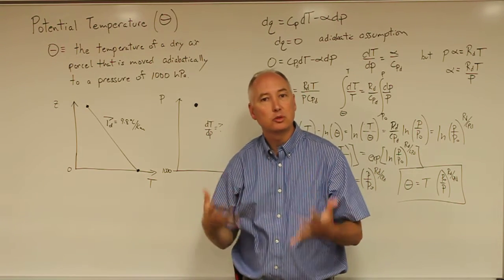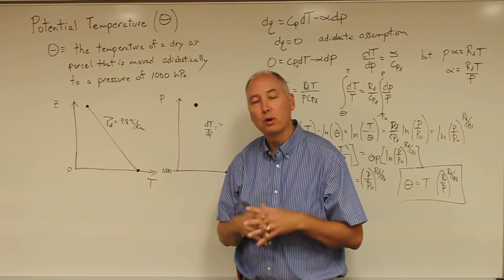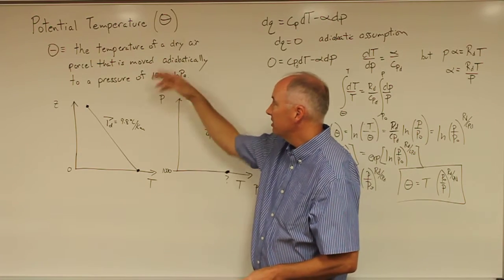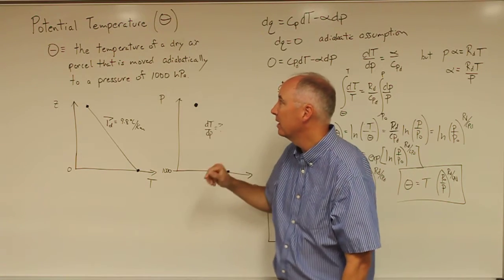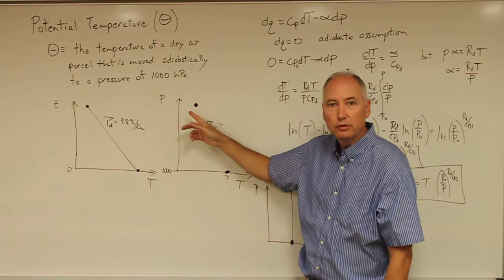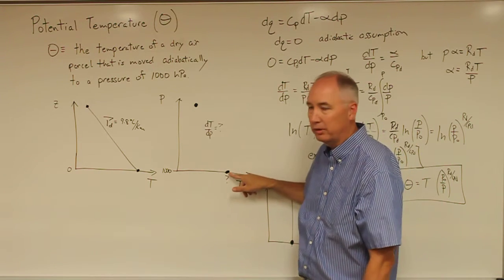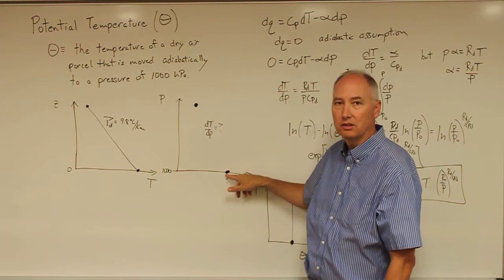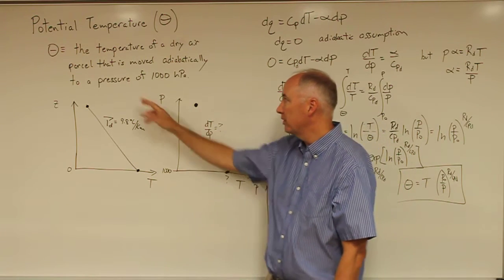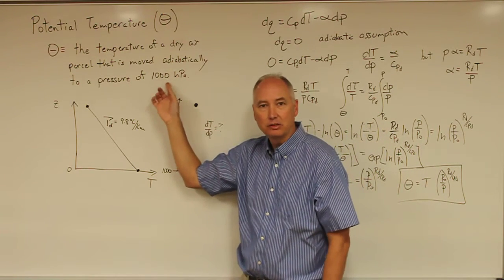Potential temperature may seem strange at first, but what it really is, is defined as the temperature that a dry air parcel will have if you move it dry adiabatically down to a pressure surface of 1,000 hectopascals. Note that this pressure surface is not the standard sea level pressure.